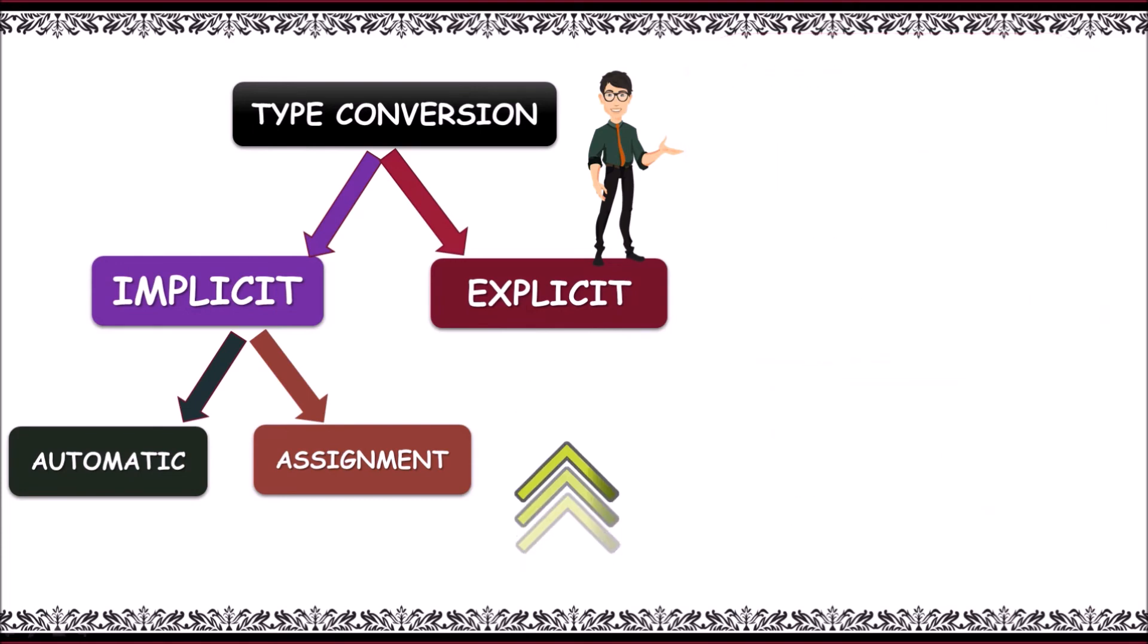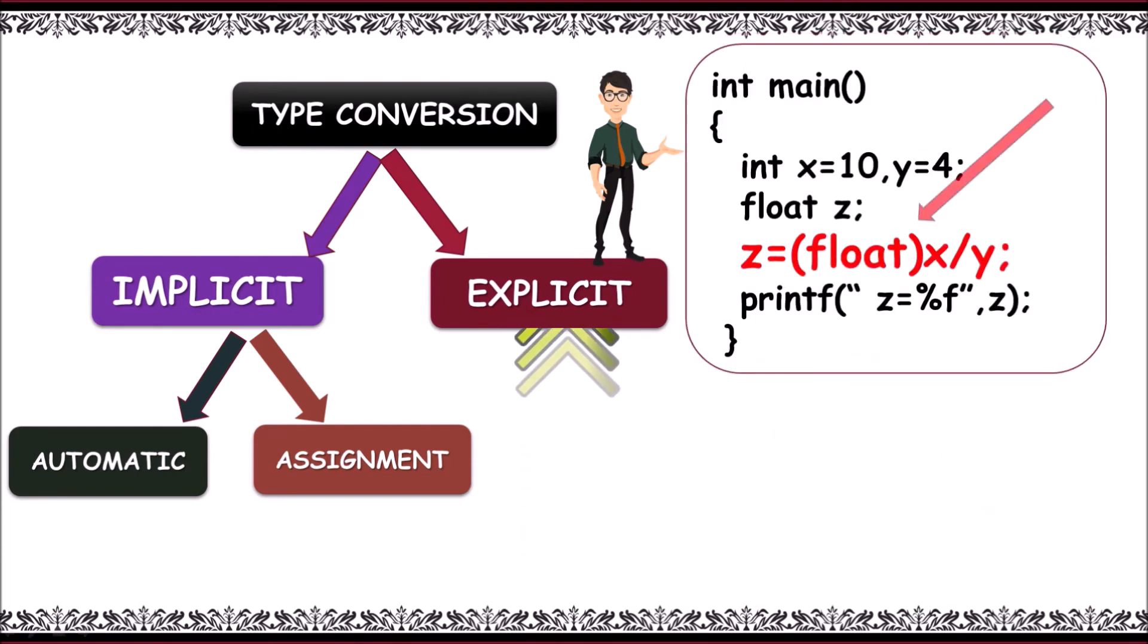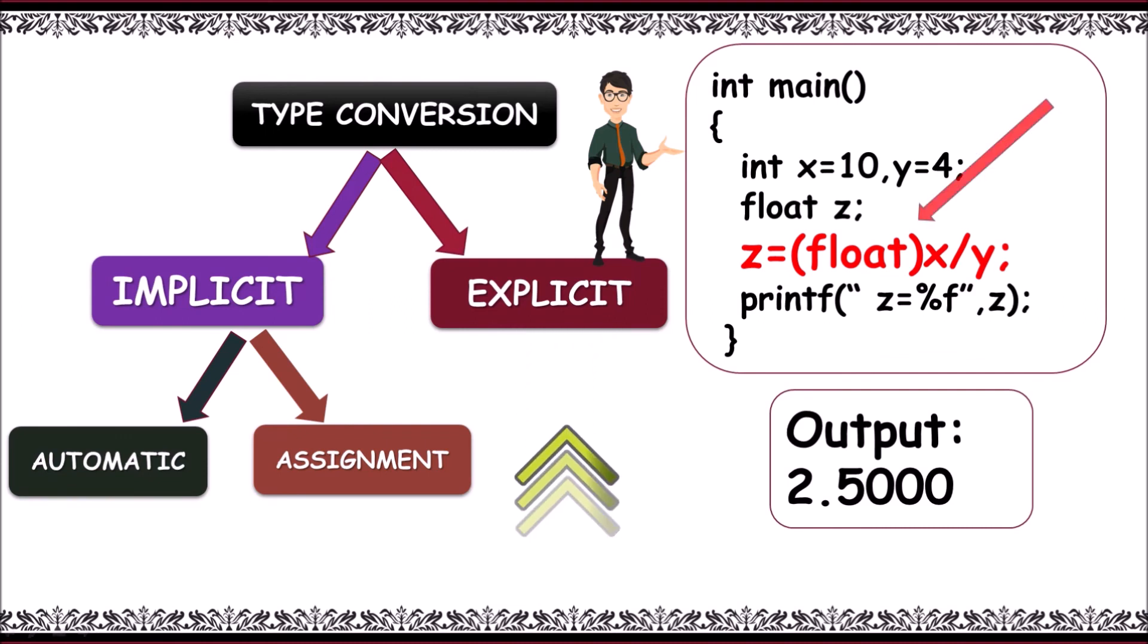Now, let's place float data type name explicitly beside x by y, that is, z is equal to float of x by y. Then, x and y of int type gets converted to float, that is, 10 by 4 as 10.0 by 4.0 gives 2.50 as output. This is called explicit type conversion.